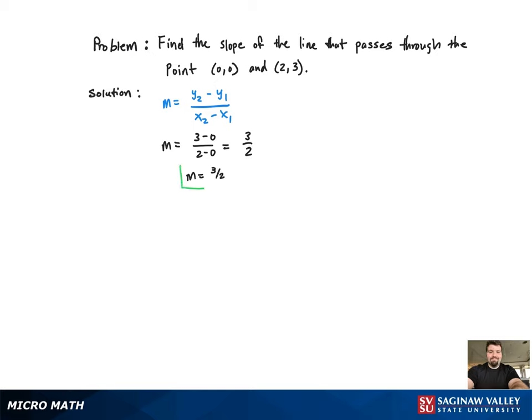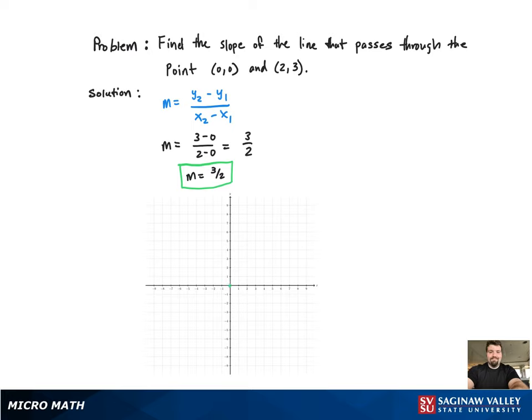Now we're going to go through the process of graphing this. So we'll start with the point (0,0). Now using the slope as rise over run, we're going to rise 3, then run 2. And there's the second point, and that's the point (2,3).